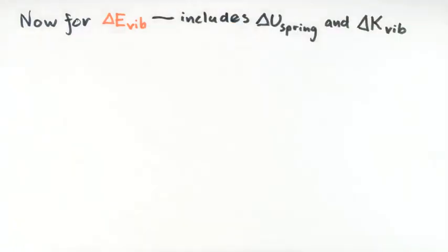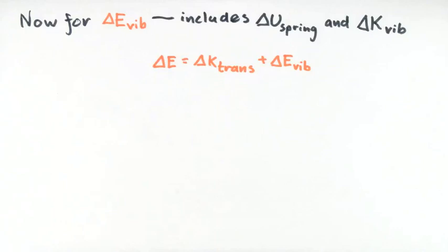Now we're ready to find the total change in vibrational energy, delta E vibe. This includes both the change in spring potential energy as well as the change in the kinetic energy of vibrations — oscillations relative to the center of mass. This is an internal energy change, and so it is counted as part of the total energy changes in the energy principle applied to the full multi-particle model. We also include here the change in translational kinetic energy, which is the same as we found in the point particle model.